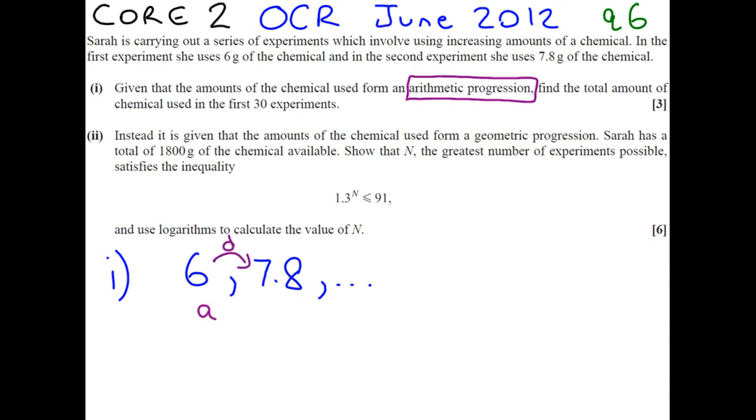So the first term is A, the next term is A plus D. That means that we can find the common difference D by doing 7.8 minus 6. And 1.8 would be the value that we're adding on each time.